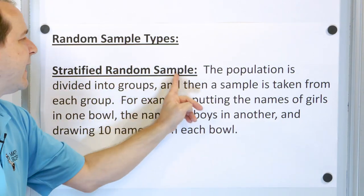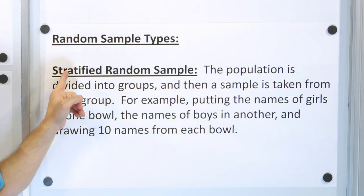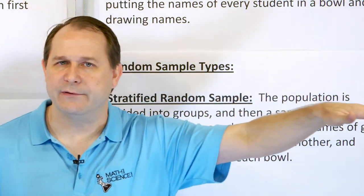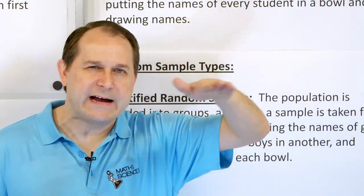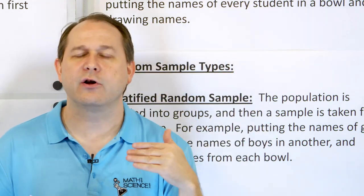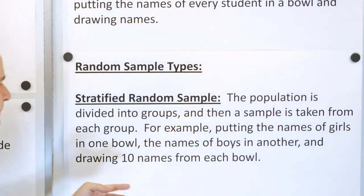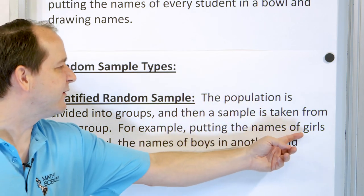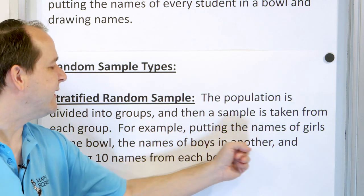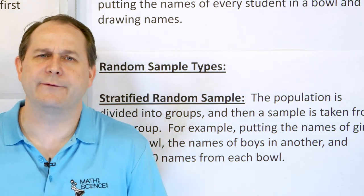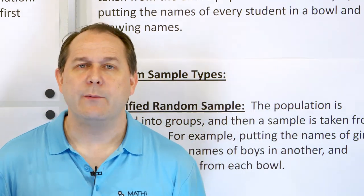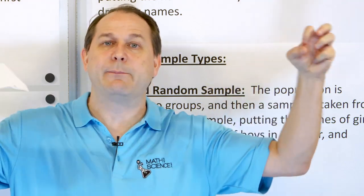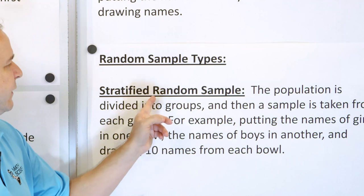Next, we have a stratified random sample — just a different kind of random sample. What does stratified mean? In geology, stratification is when you have rock layers you can see when you dig down. Here, stratification means the population is divided into groups and a sample is taken from each group. For example, we put the names of girls in one bowl and boys in another, and draw 10 names from each bowl.